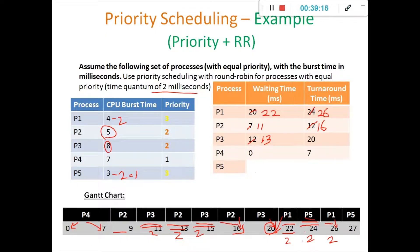Now let us look into the last process P5. P5 has started its execution only after 20 milliseconds, at the 23rd millisecond, so it has waited up to 22 milliseconds. Then it executed for 2 milliseconds, then again waited for 2 more milliseconds while the CPU was released from P1. So 22 plus 2 equals 24 milliseconds waiting time. Its completion time is 27 milliseconds.